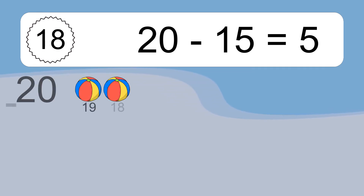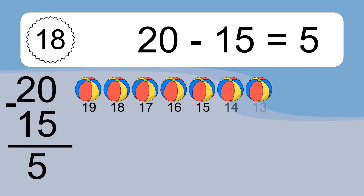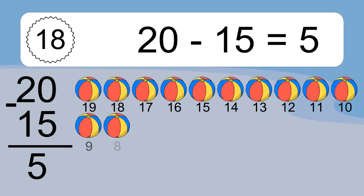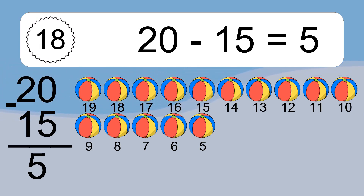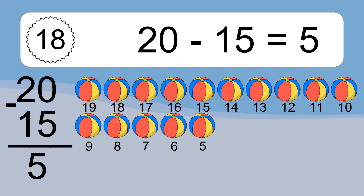20 minus 15 equals 5. Let's count it: 19, 18, 17, 16, 15, 14, 13, 12, 11, 10, 9, 8.